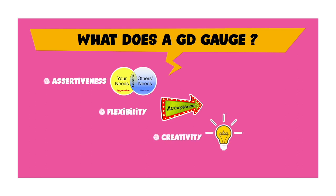The next thing a GD gauges is your creativity. In the past, most topics used were factual in nature. But companies have realized that most students come very well prepared for factual topics, so it is difficult to select the best candidates. Hence, these days they have started making group discussions more challenging by giving abstract topics. Abstract topics are nothing but nonsense topics, and what the panel expects you to do is make sense out of nonsense. In order to do that, you really need to have a lot of creativity, and you need to be quick thinking because you will not have a lot of time to prepare something interesting to say.